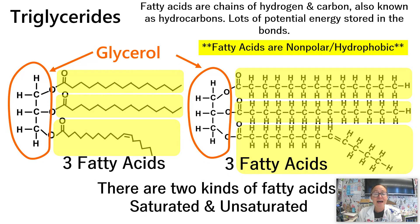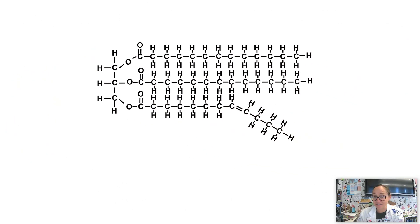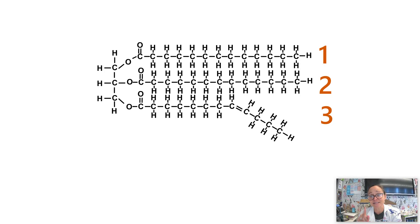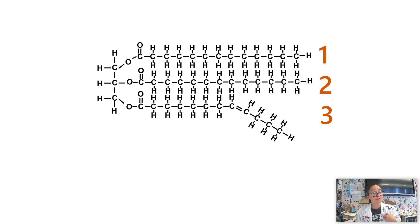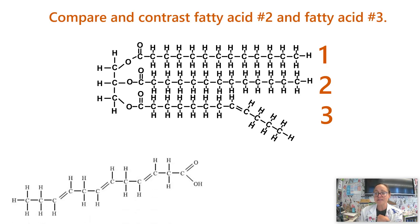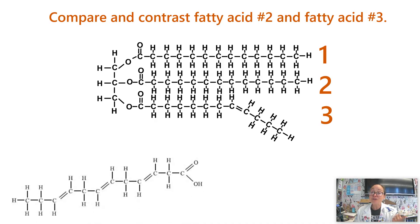There are two different kinds of fatty acids: saturated and unsaturated. Saturated means full — fatty acid 1 and fatty acid 2 are full of hydrogens; you cannot fit any more hydrogens on that carbon skeleton. Fatty acid number 3 is unsaturated — it has a double bond between two carbons towards the end, which causes what we call a kink or a bend in that fatty acid chain. If there are multiple double bonds, each one causes an additional bend in the fatty acid tail.